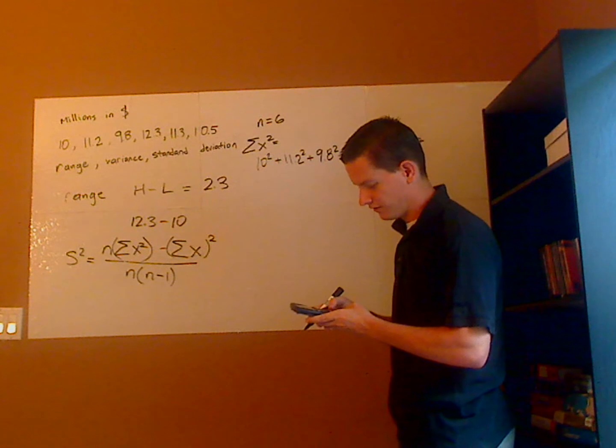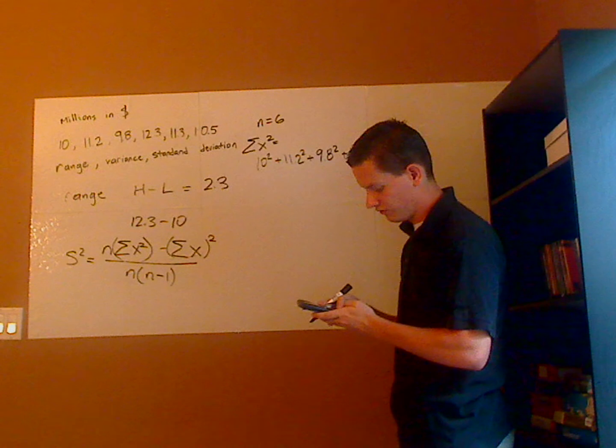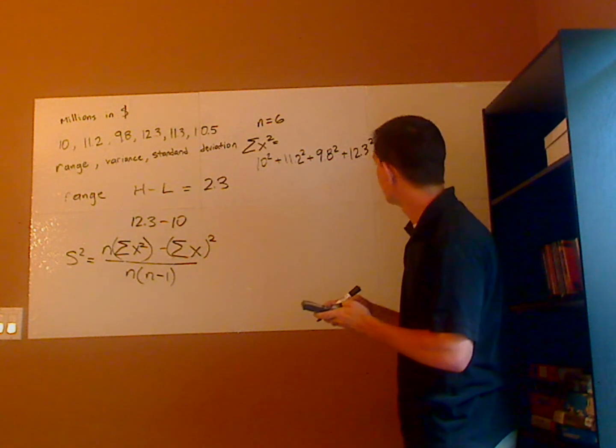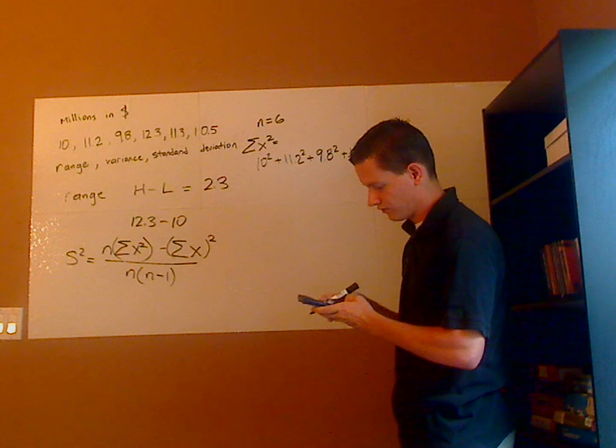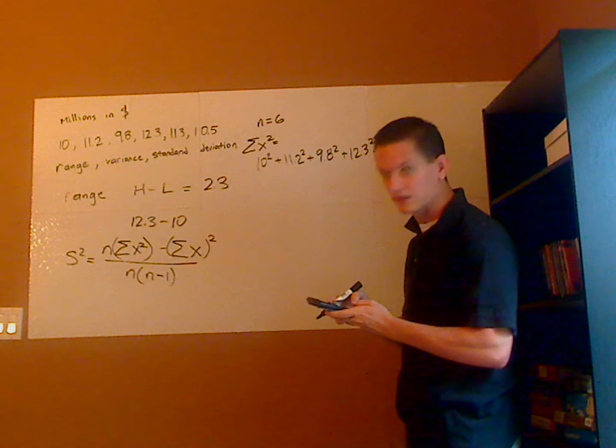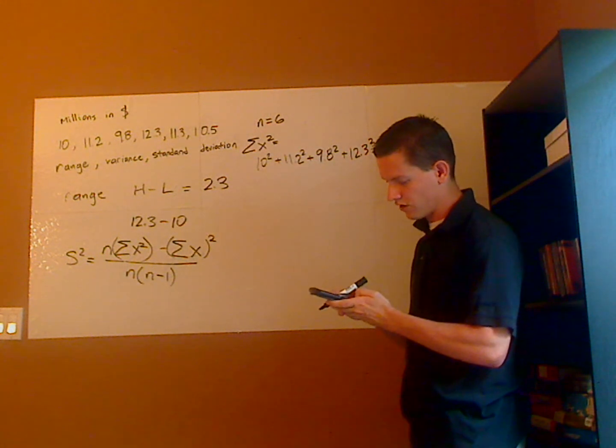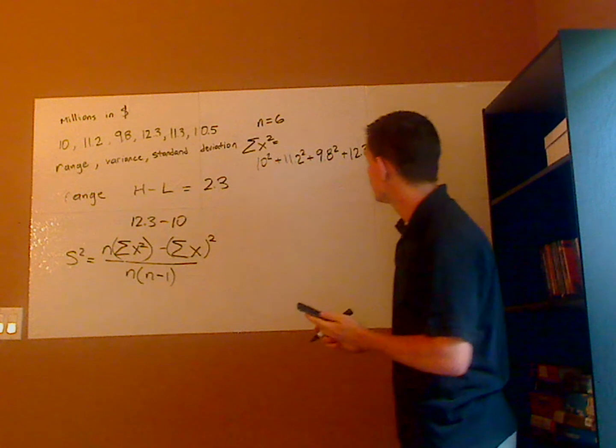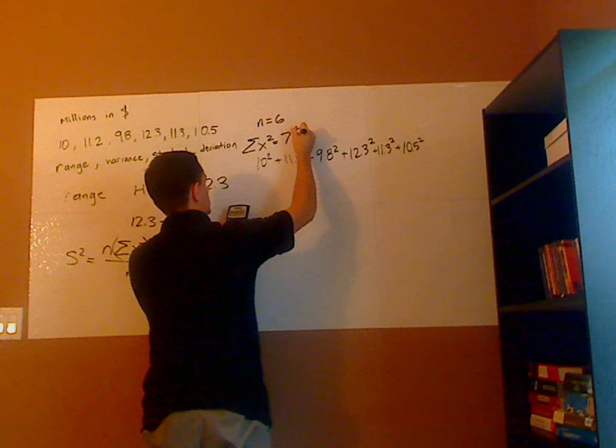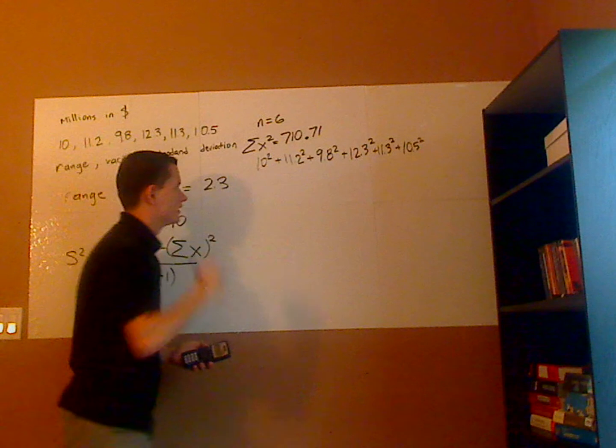10 squared plus 11.3 squared plus 10.5 squared, and that gives me 710, 710.71, 71 hundredths.